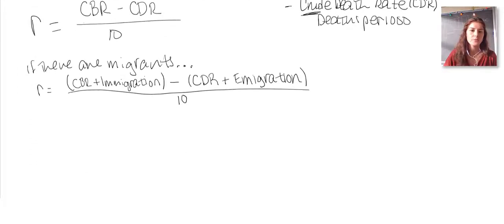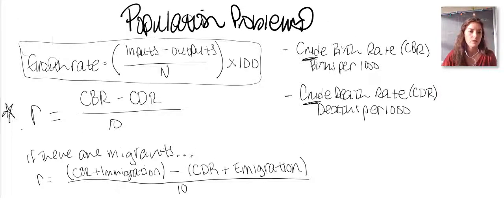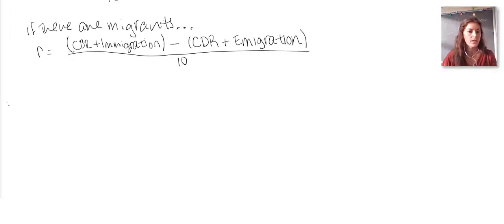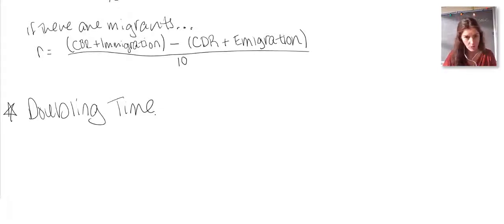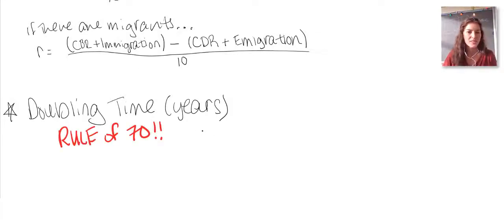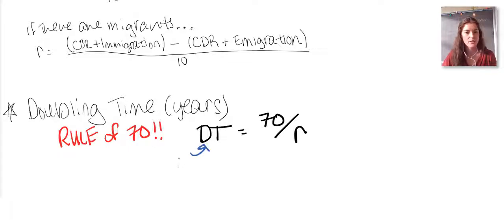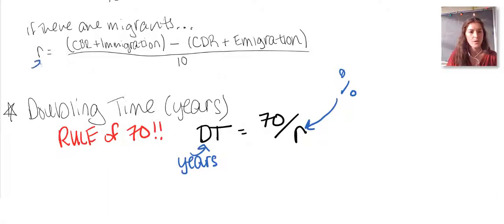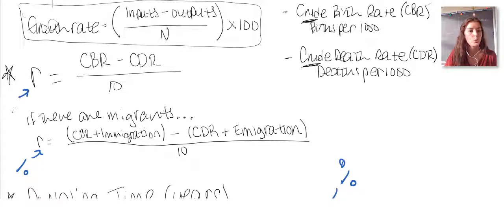You'll also be asked to calculate doubling time — how long it takes for a population to double, expressed in years. Use the Rule of 70: don't try other techniques, especially on the AP exam where speed matters. Doubling time equals 70 divided by r, where r is your growth rate in percent. If you calculate r using CBR minus CDR over 10, your r value will already be in percent.